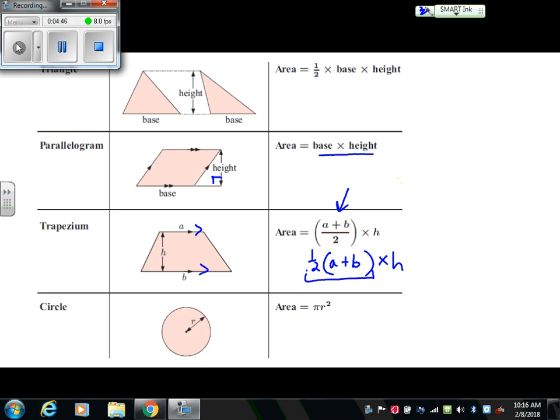And then finally, we have our circle. And circle is a very similar area formula to its circumference formula, which was 2πr. Well, you'll notice there's a 2 in it, but this time it is an exponent. So instead of 2πr, we have πr squared. And r squared isn't r times 2, but rather r times itself. All right, let's look at some examples using these formulas.